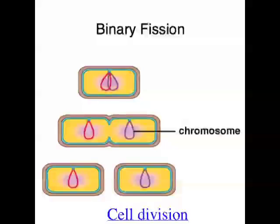The second type of cell division is called mitosis, and that happens in eukaryotic cells. It's cell replication, and you end up with two daughter cells which are identical to the parent cell. The third type is called meiosis, which also occurs in eukaryotic organisms, and it's basically when sex cells or gametes are formed.